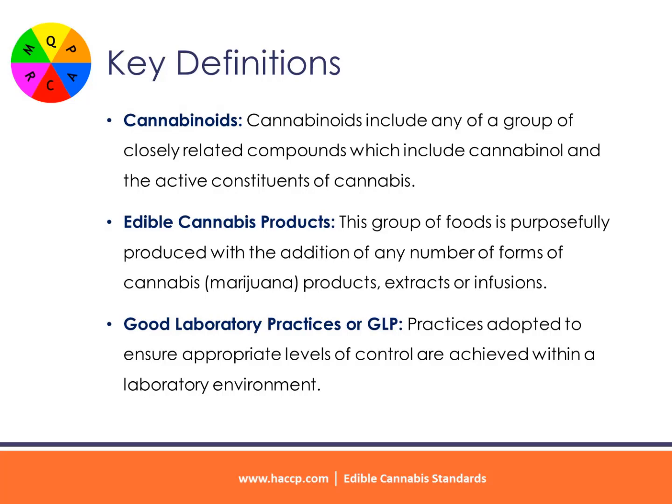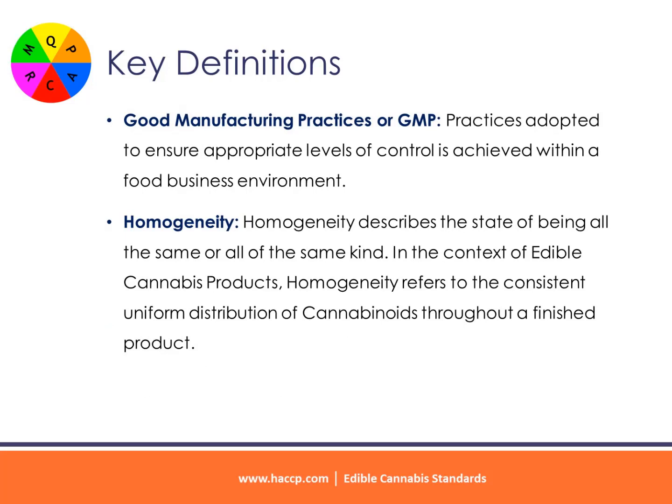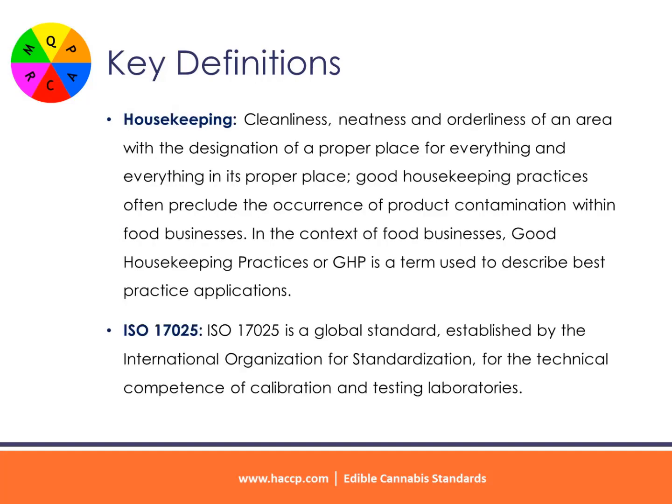Good laboratory practices (GLP): practices adopted to ensure appropriate levels of control are achieved within a laboratory environment. Good manufacturing practices (GMP): practices adopted to ensure appropriate levels of control are achieved within a food business environment. Homogeneity: describes the state of being all the same or all of the same kind.